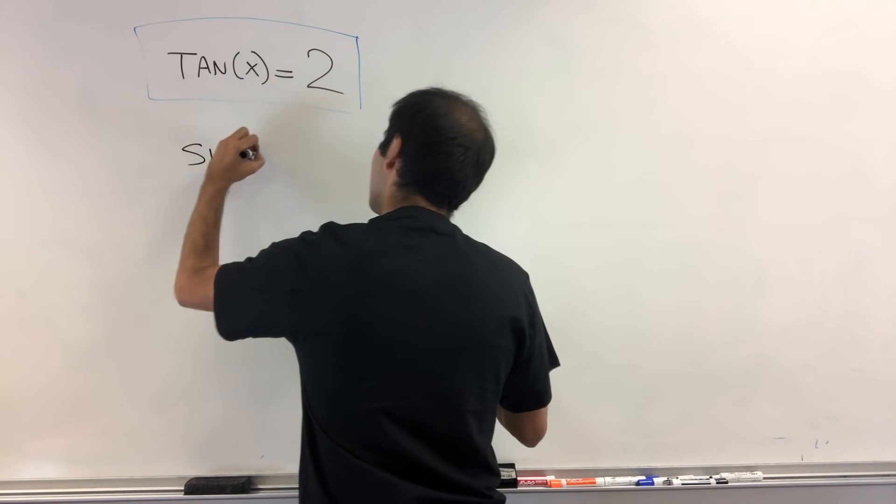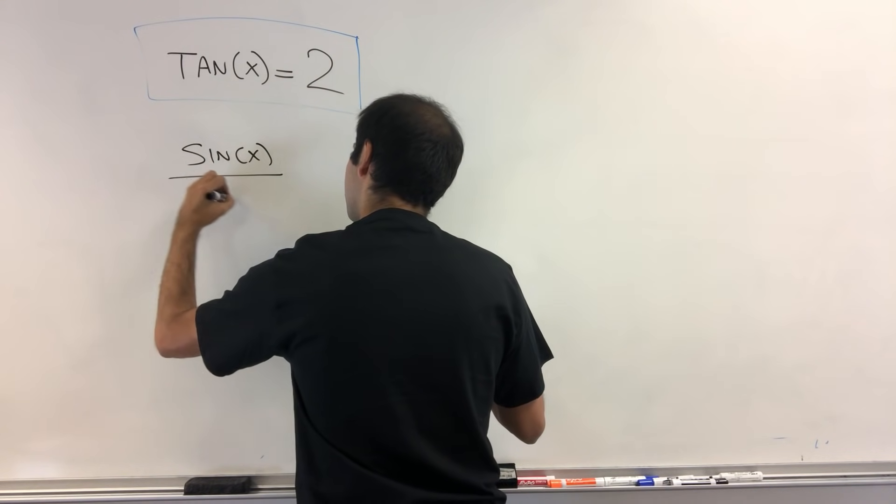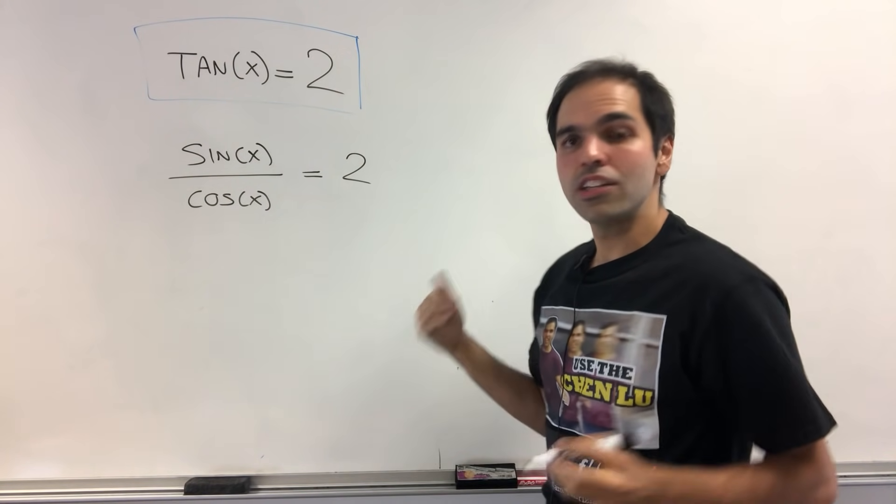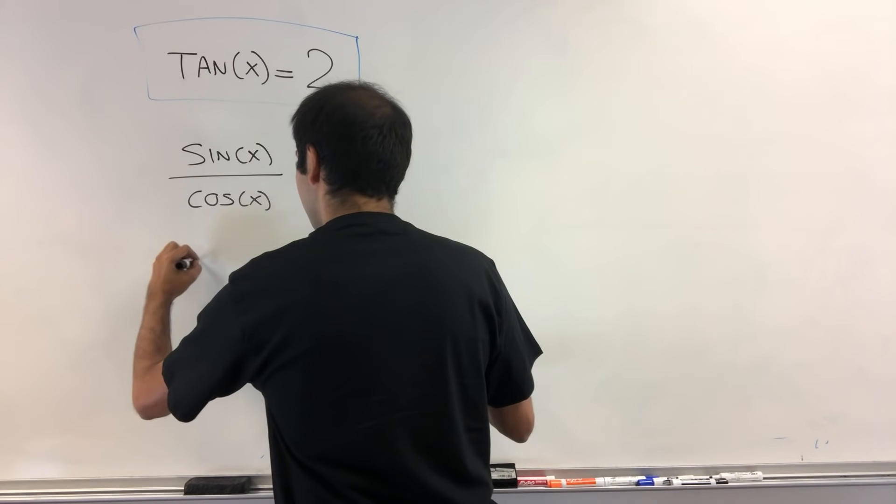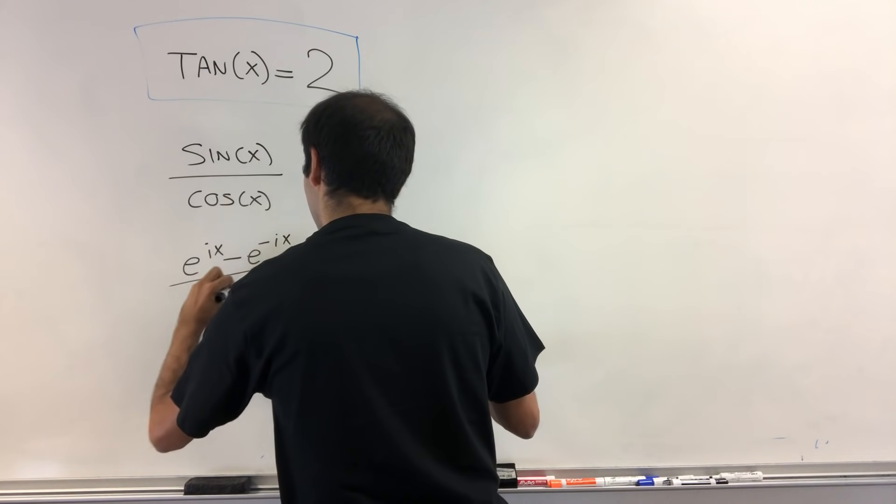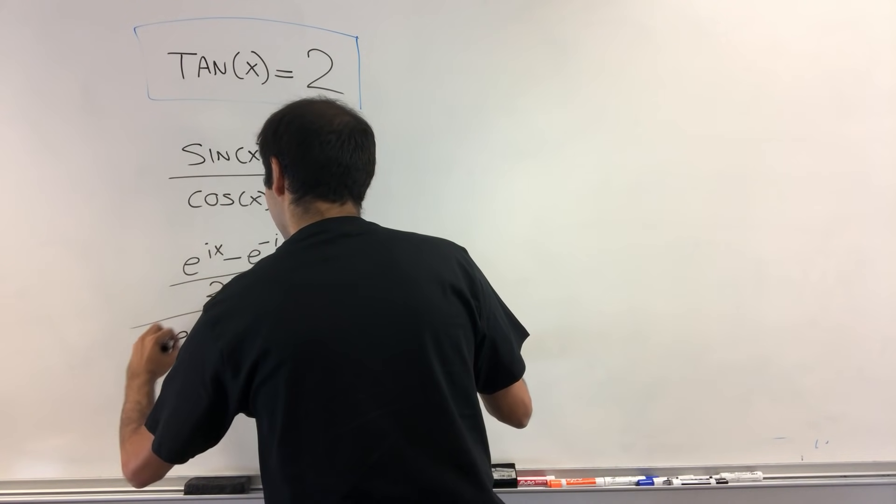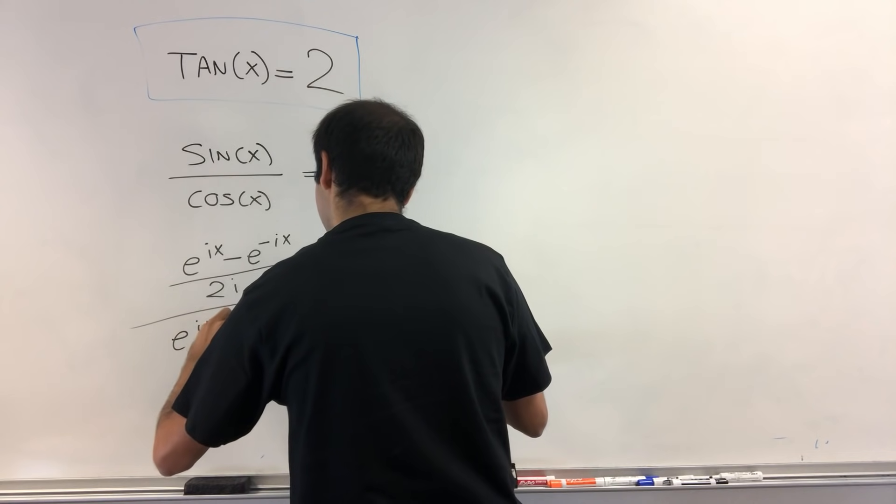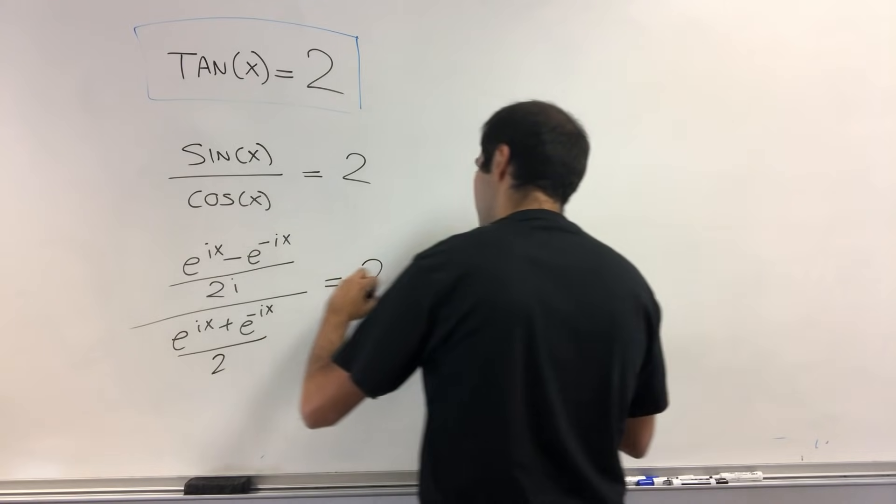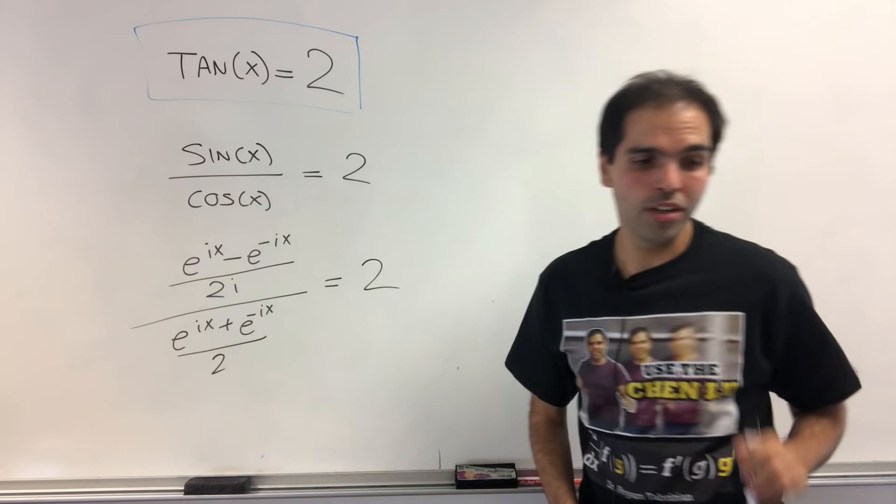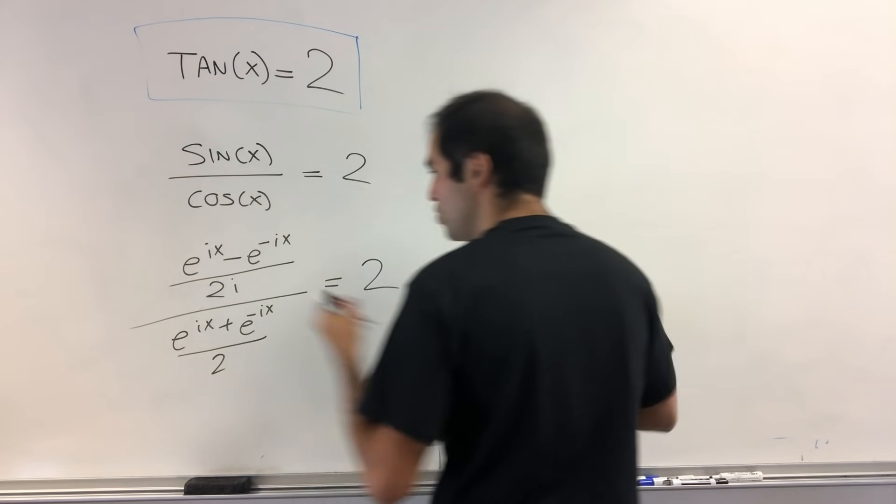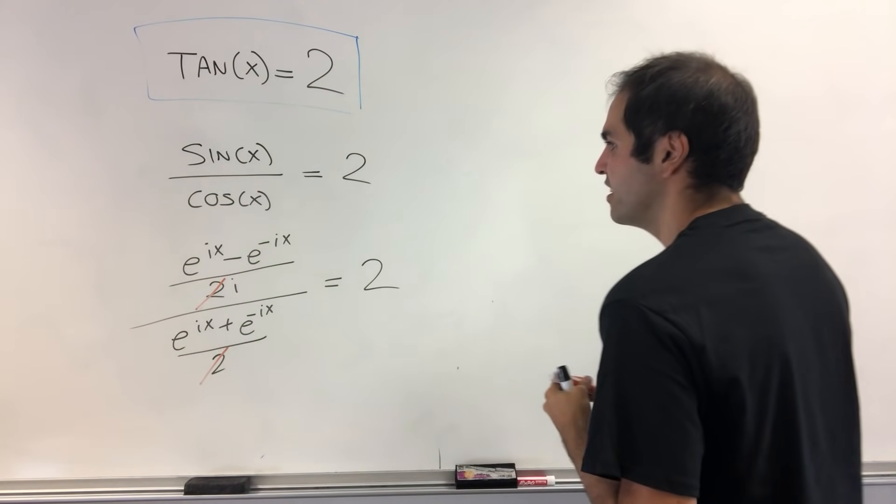So sine of x over cosine of x equals 2. But what is sine in terms of complex exponentials? It's e to the ix minus e to the minus ix over 2i, and over e to the ix plus e to the minus ix over 2. And you set this equal to 2, and already, first simplification, the 2s cancel out. It's already very good.